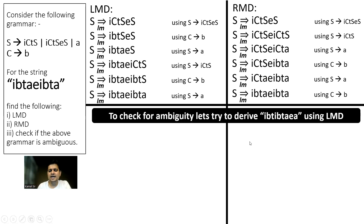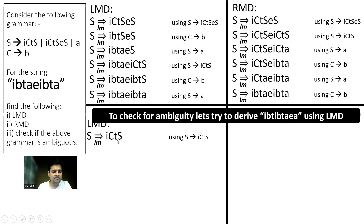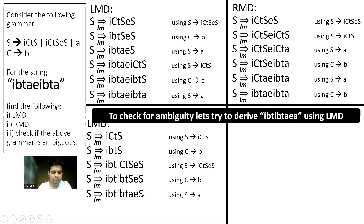I have to take an example — say, IBT, IBT, AEA — and we will solve this using more than one LMD. This is the requirement; you can make other assumptions also. We say S derives ICTS. This gives us one LMD — one LMD is possible.